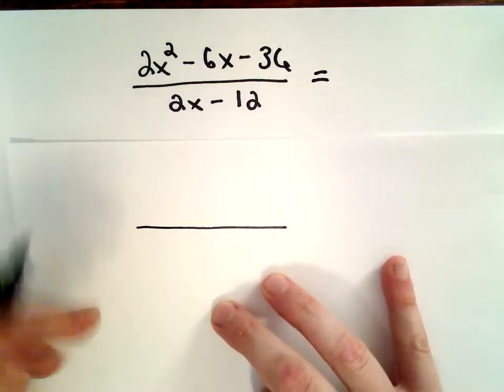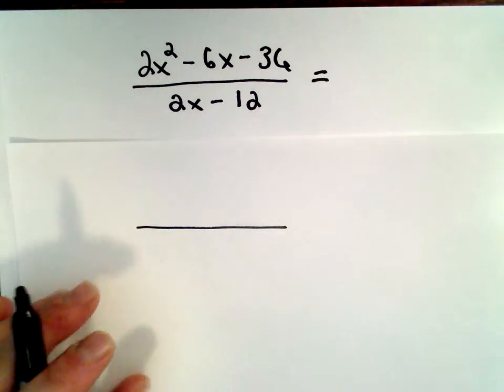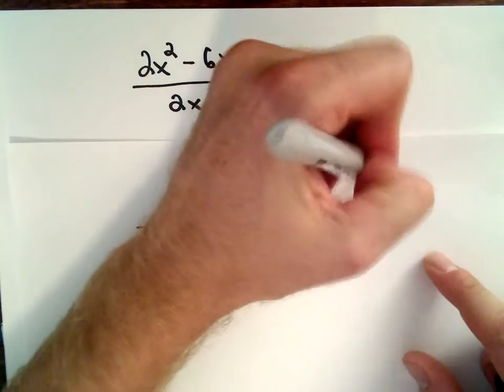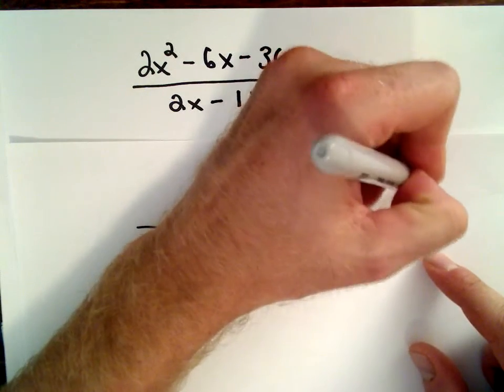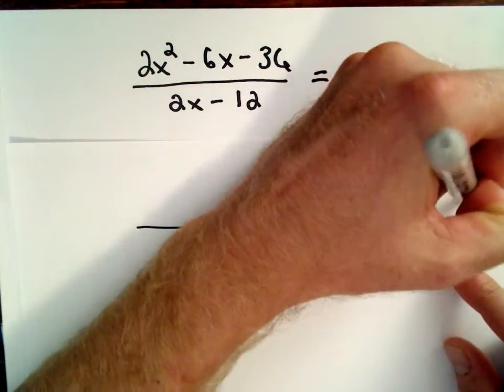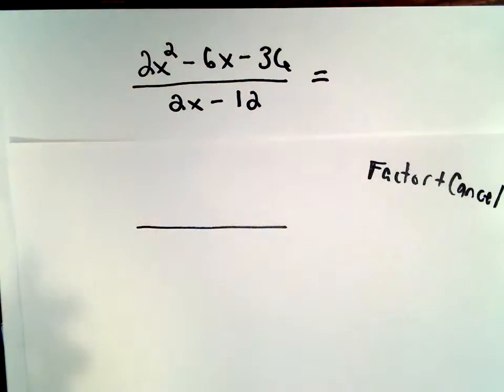Okay, so the first thing I notice, the trick again here is trying to factor. That's what we're trying to do in this case. We're going to try to factor and cancel. That's the whole algebraic skill.